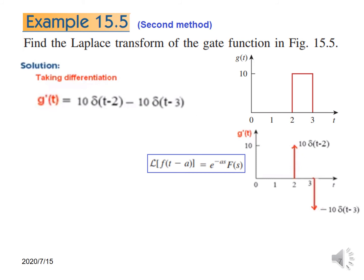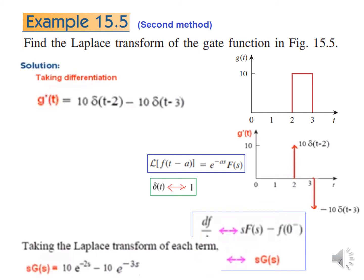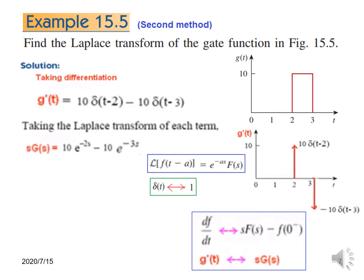Mathematically, we can write the differential form of the gate as 10 delta(t minus 2) minus 10 delta(t minus 3) — the summation of these two. We will apply the time shifting formula here as well. The Laplace of delta is 1, so F(s) will be 1. There is another formula: the Laplace of the derivative g'(t) gives S·G(s) minus G(0). Ignoring the initial condition, since our function is g'(t), its Laplace will be S·G(s).